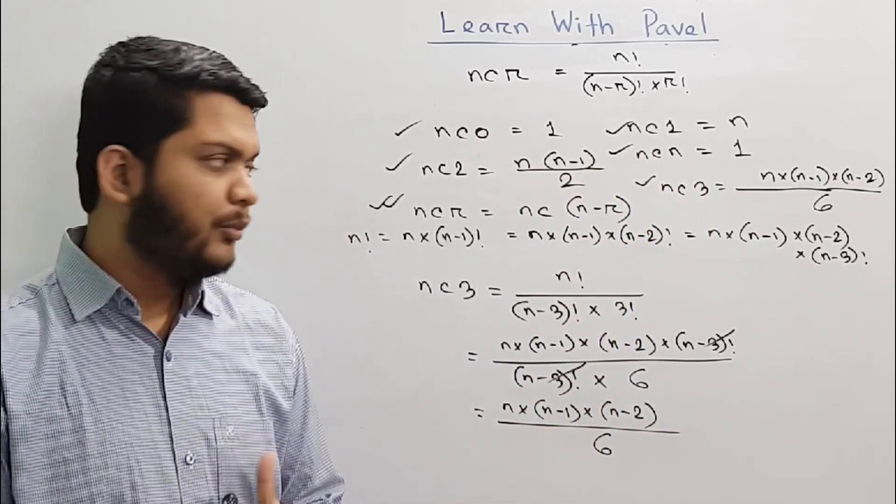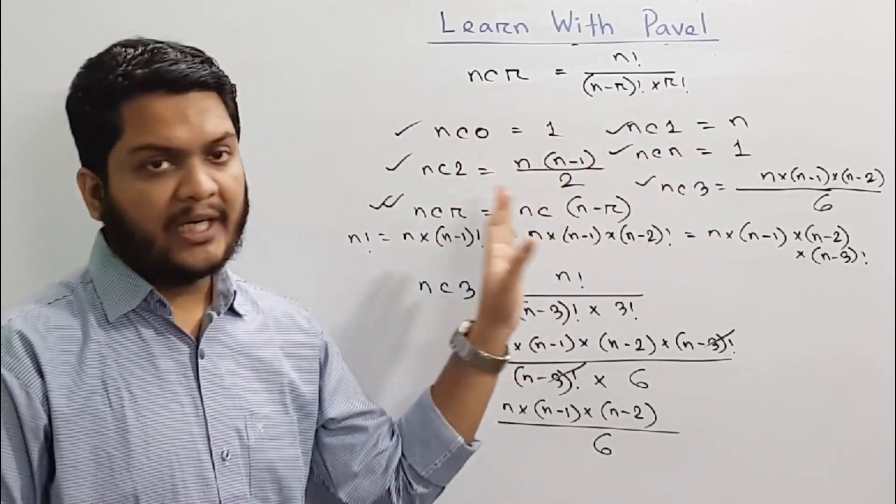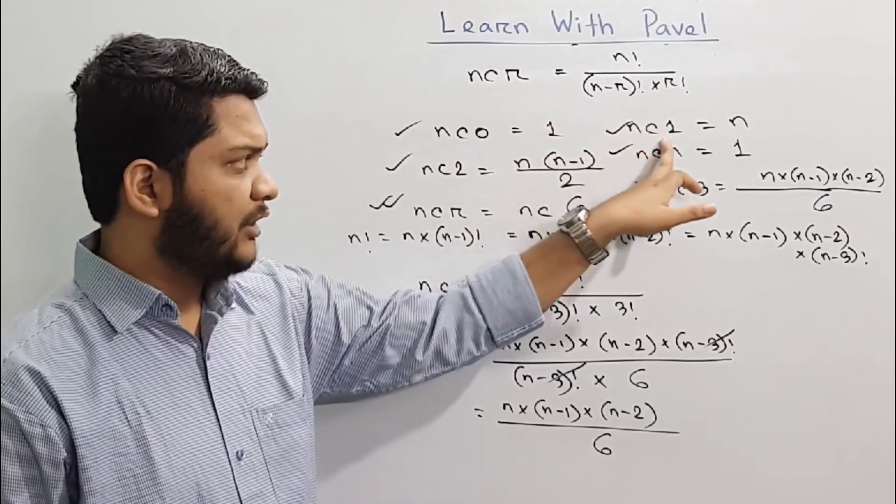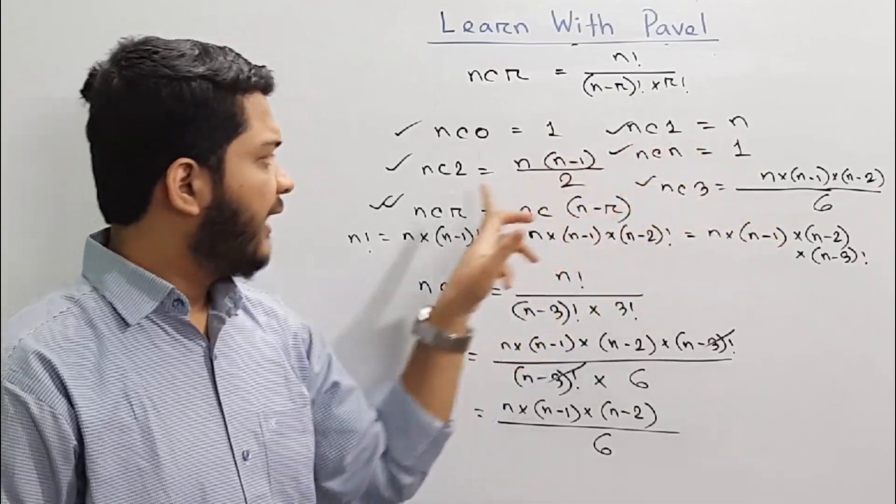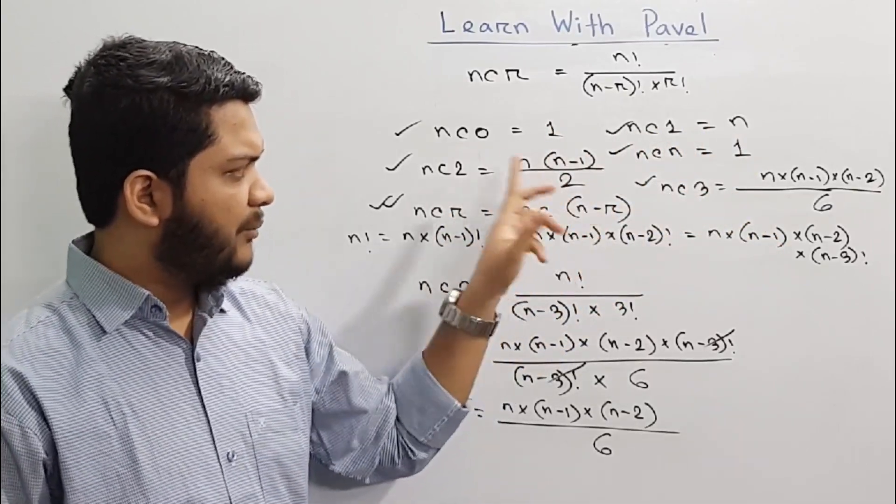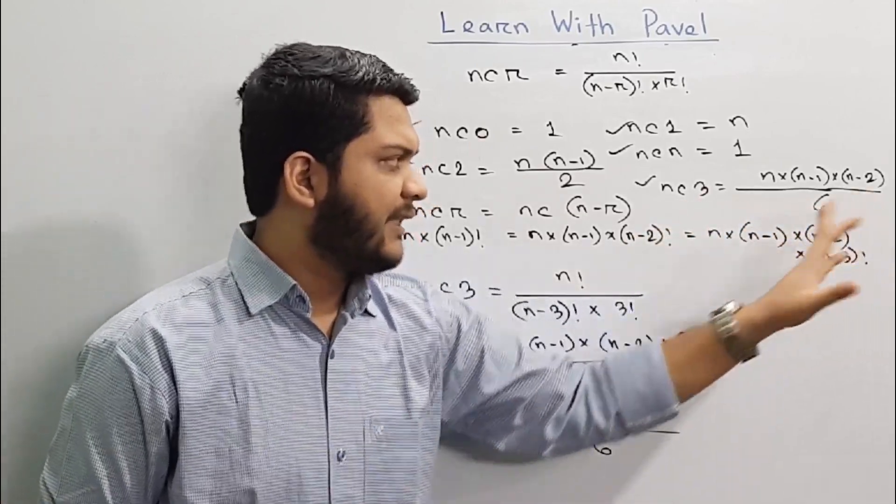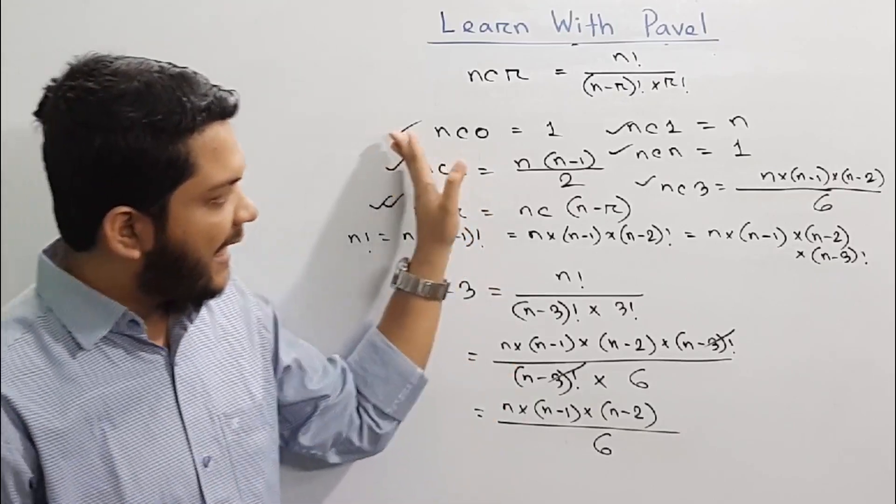Next, if you take this formula from 3 factorial, it will be called n minus 3. So if you look at this formula, the answer is nC1, n minus 1, n minus 2 equals to n minus 3 divided by 6. This formula tends to be shown in the graph.